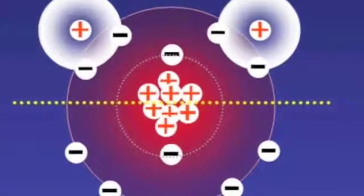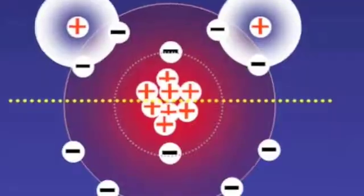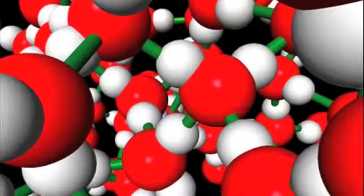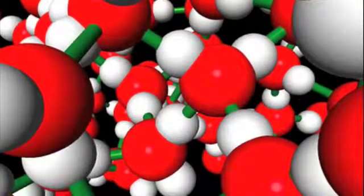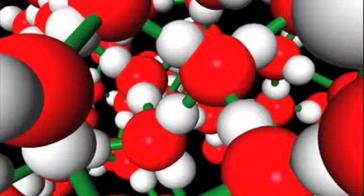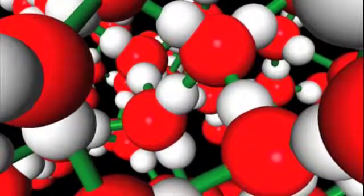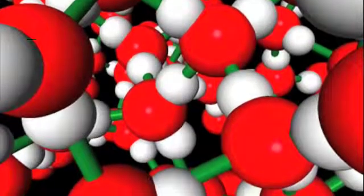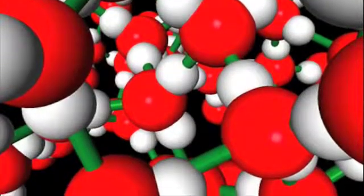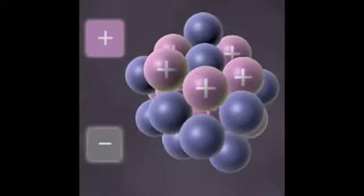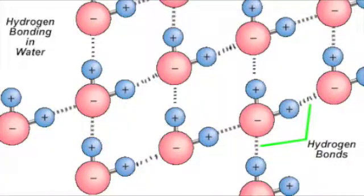Also, since oxygen is more electronegative than hydrogen, the electrons of the covalent bonds spend more time closer to oxygen than to hydrogen, simply meaning that they are polar covalently bonded. This unequal distribution of electrons makes water a polar molecule, which means that the two ends have opposite charges — the oxygen has a negative charge and the hydrogen has a positive charge.